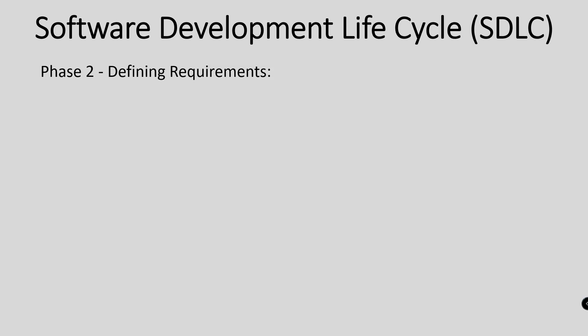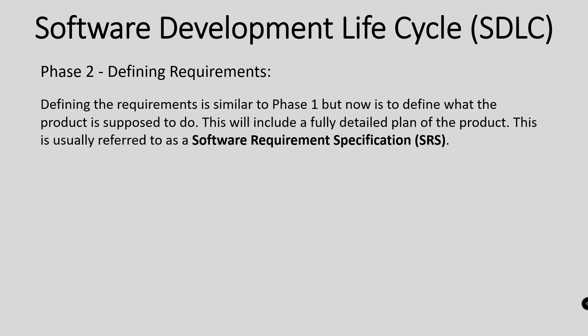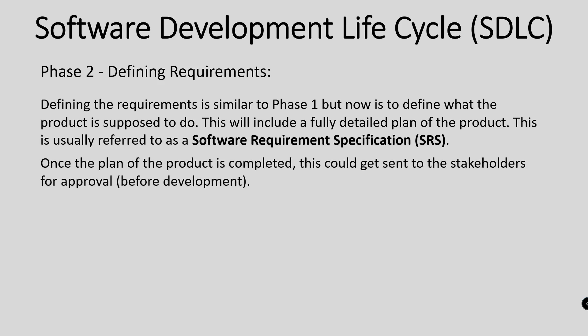Phase 2: defining requirements. Defining the requirements is similar to phase 1 but is now to define what the product is supposed to do. This will include a fully detailed plan of the product, usually referred to as the software requirement specification. Once the plan of the product is completed, this could get sent back to the stakeholders for approval.